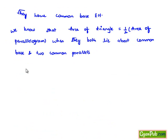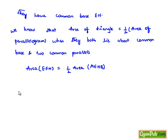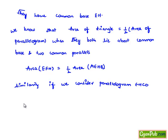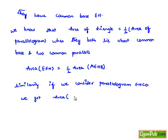Therefore, we can say the area of triangle EFH is equal to half times the area of parallelogram AEHB. This will be equation number 1. Similarly, the area of triangle EGH is equal to half the area of parallelogram EHCD. This will be equation number 2.